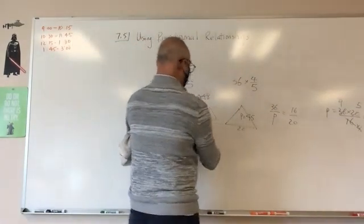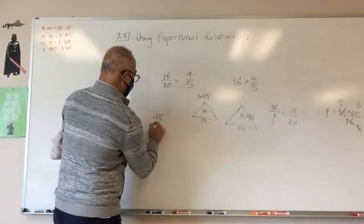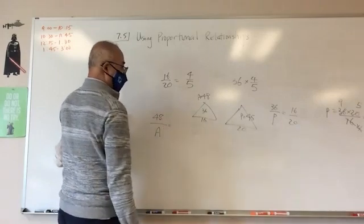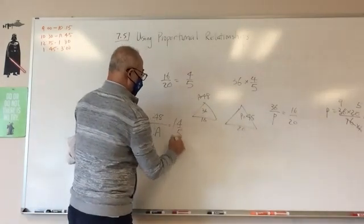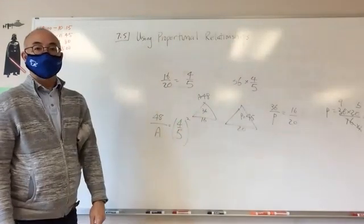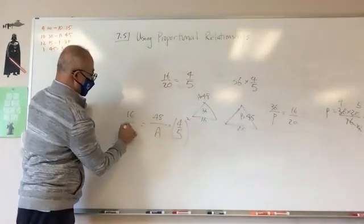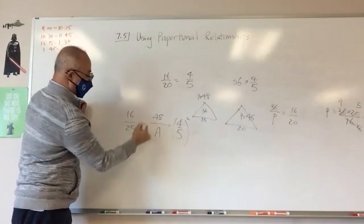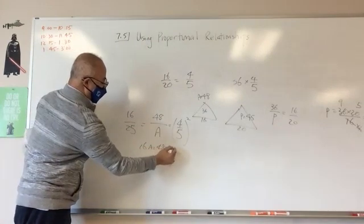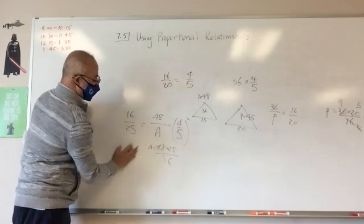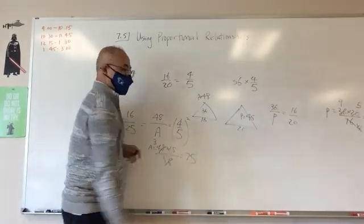So the area was 48. So this to this, 48 to the new area that I'm trying to find, it's going to be this to this, but it's going to be squared. Because it's the area, so let's square it. So we're going to get 16 over 25. 16a equals 48 times 25. Divide by 16. 75. That's right.